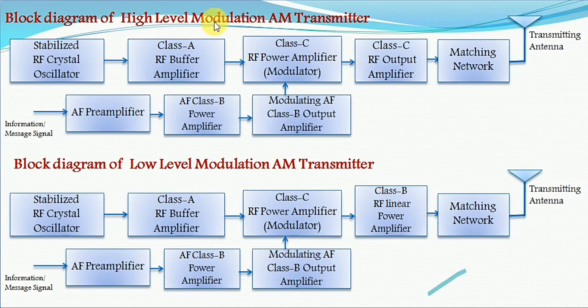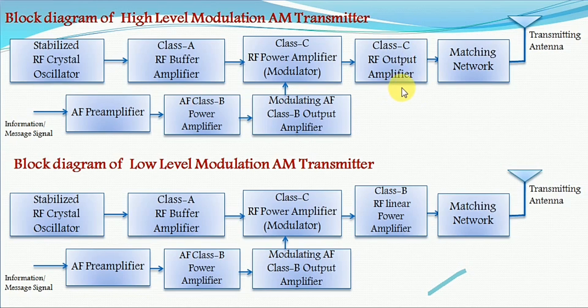In high level modulation, this amplitude modulated wave is again passed through a class C RF output amplifier. This is done in order to boost up the signal strength or power of the modulated signal using a high efficiency amplifier. Because of using the class C RF output amplifier at the output of the modulator circuit, we obtain a high power modulated signal.